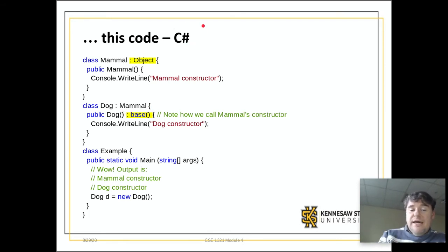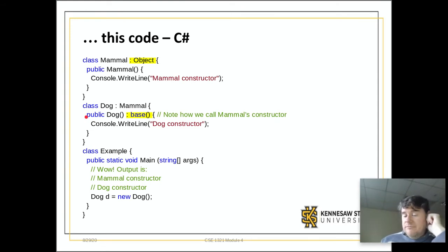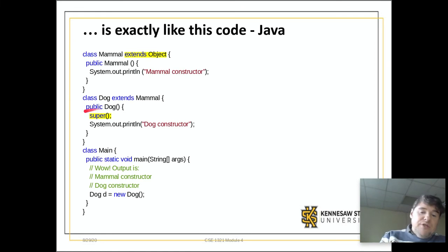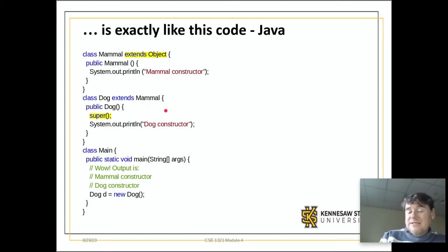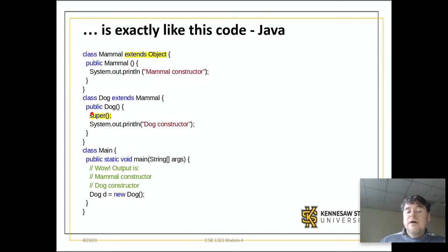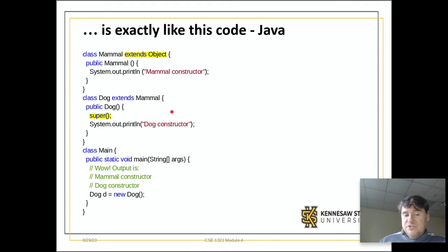This is the C# version: it is colon base to say I want to call my base's constructor—my parent's constructor. If we zip over to Java code, the difference is I put in the word super instead of base. The syntax is quite different: in C# after the constructor name there is a colon and the word base; in Java inside the method body I call super(). This is going to call the constructor which would have happened either way, but specifying parameters lets you choose which overloaded constructor gets called.